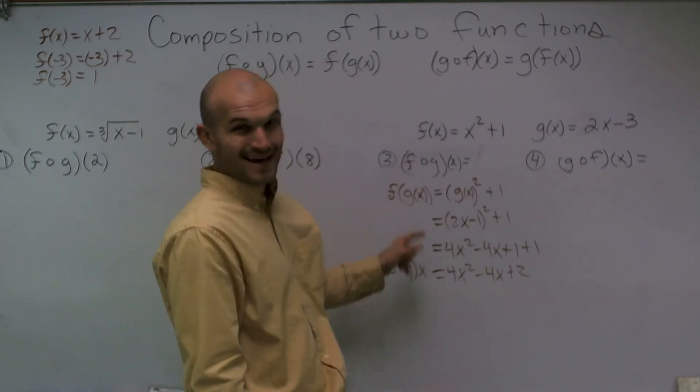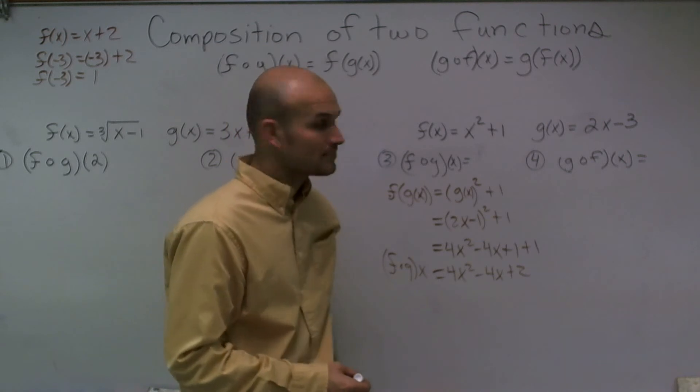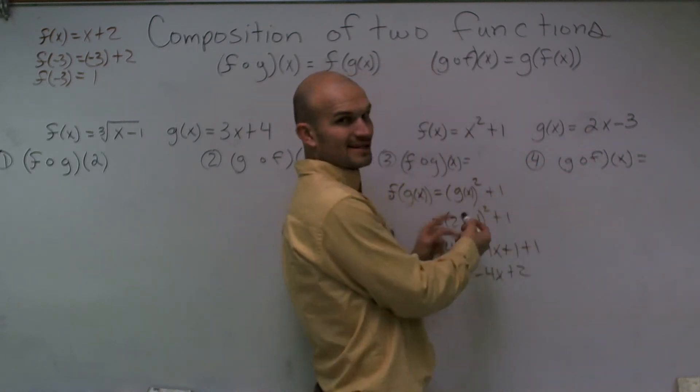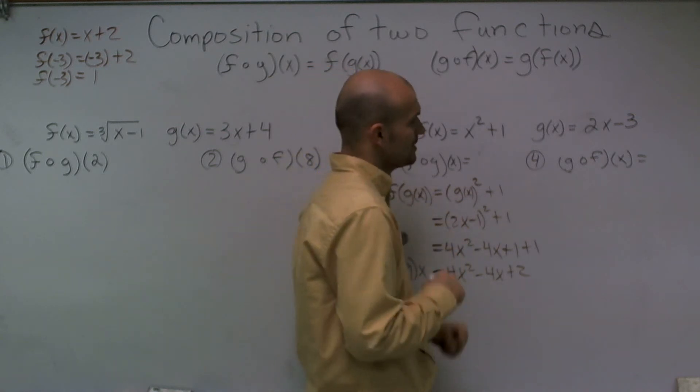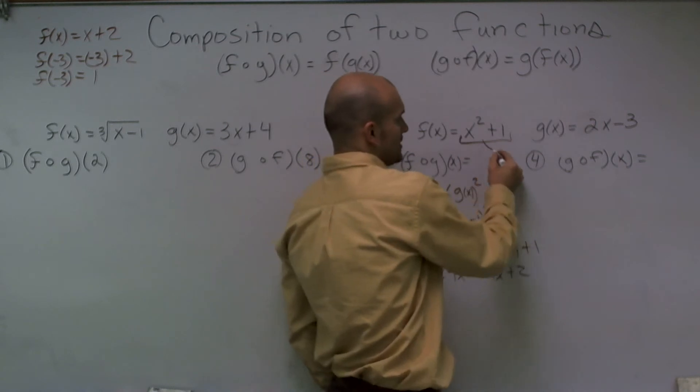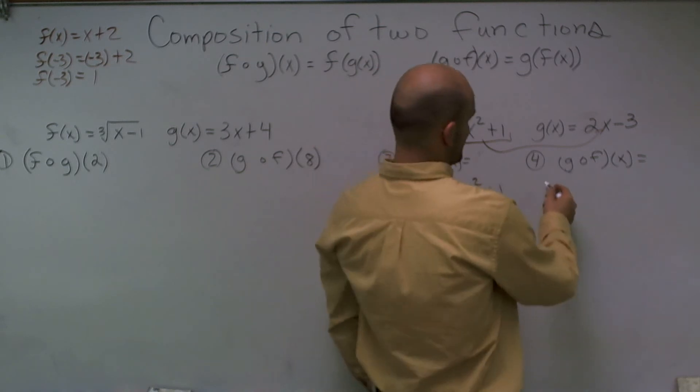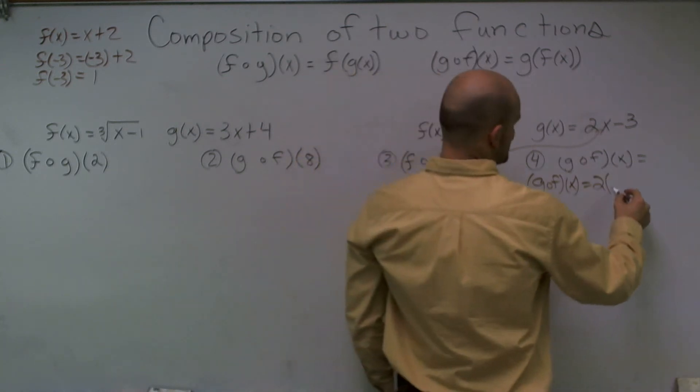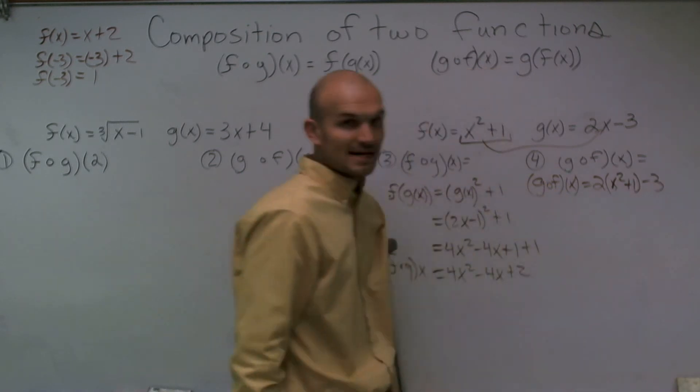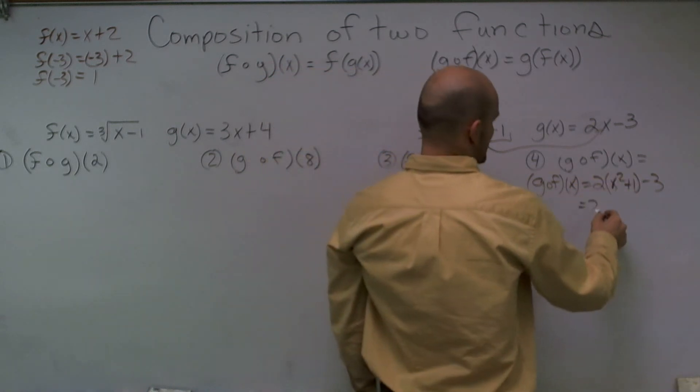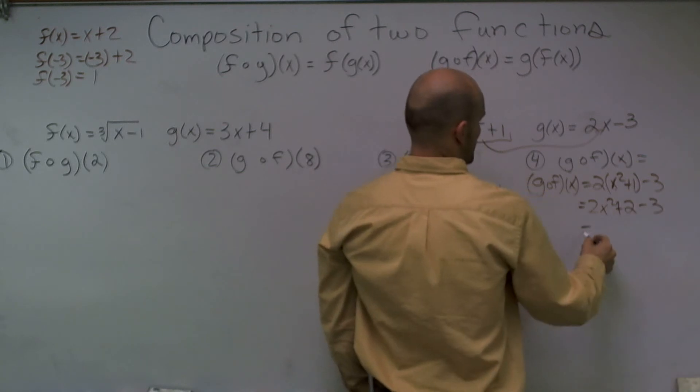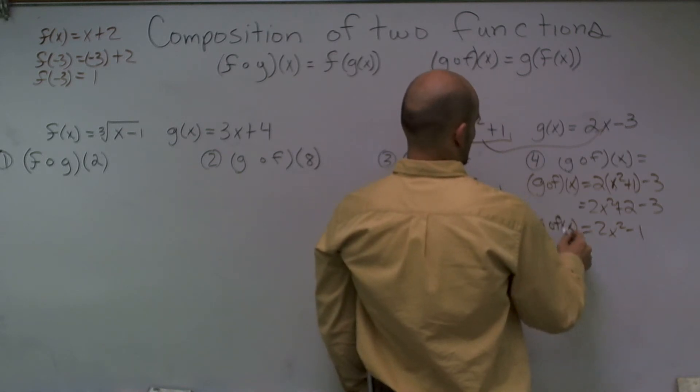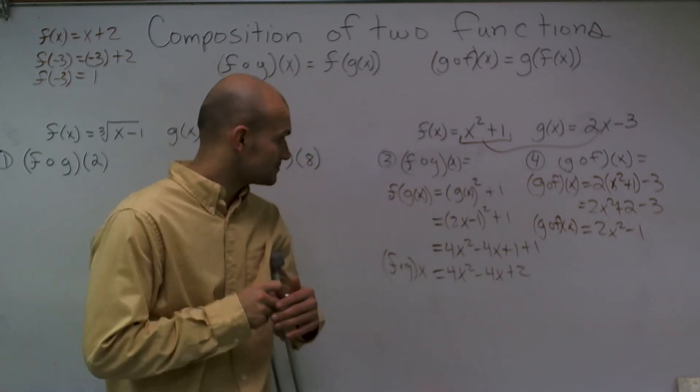Your book might write it like this, or it might write it like that. The next one, g of f of x. Now I'm going to take my f of x function and plug it into my g of x function. I'm just going to plug whatever my f of x function is, x squared plus 1, and I'm going to plug it in for that x. So I have g of f of x equals 2, well not times x anymore, but x squared plus 1, then minus 3 is at the end. So now I do 2 times x squared, which is going to give me 2x squared, plus 2 times 1 is 2, minus 3. Therefore, I have 2x squared minus 1.